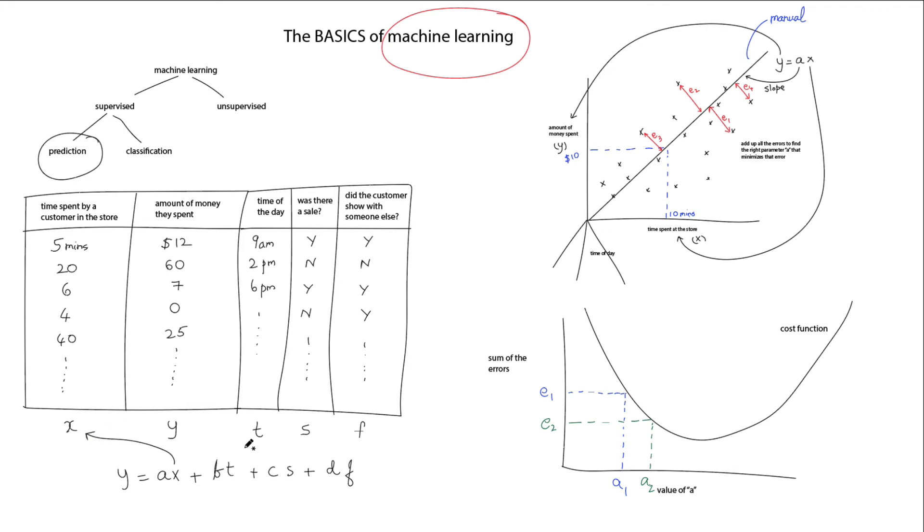Now our goal is to be able to find good values of not only a, but also b, c, and d that minimizes the total error. The error function is the same, or the cost function is the same, but it now moves into multiple dimensions that include b, c, and d.